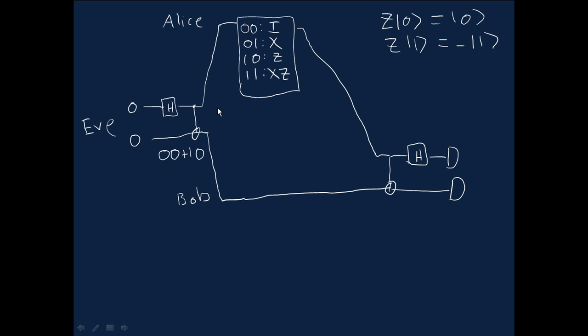All right, the next thing we do is we apply this control not gate. So here this isn't affected because the control bit is set to 0. The control bit here is set to 1, so the second one gets flipped. So it's 0, 0 plus 1, 1. So the four outcomes are up here, depending on which of these four possibilities Alice takes up.